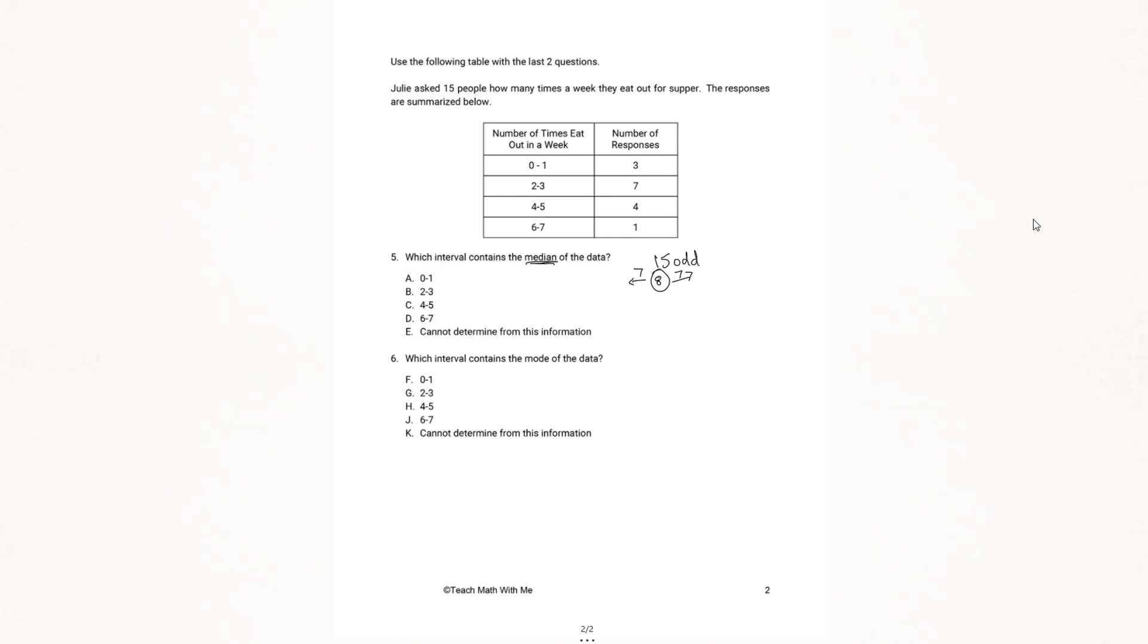So we'll use the table to find this eighth value. We're going to use these number of responses here. So the first three go along with zero to one, seven more. So we add three plus seven, that's 10 total come into the next values. So we have these seven values that are in the range of two to three. We're looking for the eighth position. So the eighth position of the response is going to be here in this range, the two to three. Because we have one, two, three, then four, five, six, seven, eight, up to 10 here. So we're going to have answer choice B.